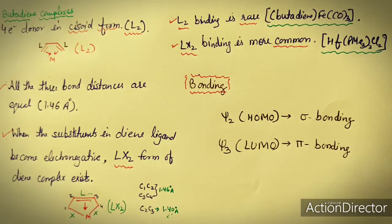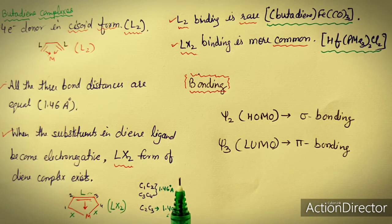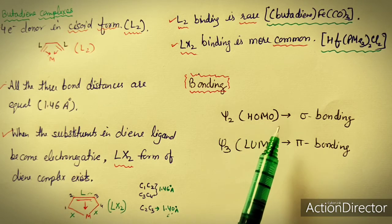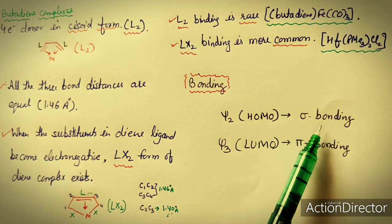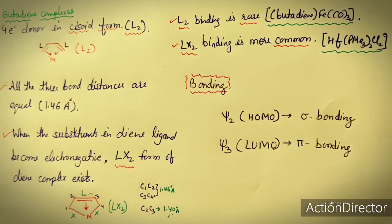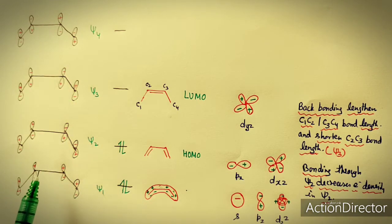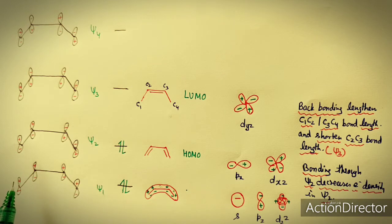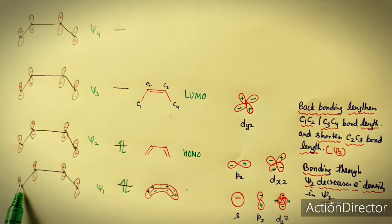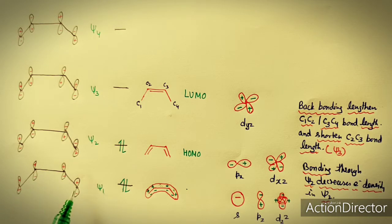Now, bonding in butadiene complexes. I will show you the molecular orbitals of the butadiene ligand. Psi 2 is the HOMO (highest occupied molecular orbital) and it forms a sigma bond with the metal, while psi 3, the LUMO (lowest unoccupied molecular orbital), can form pi bonding with the metal center. The figure shows four molecular orbitals arising from the linear combination of four p orbitals of butadiene, since butadiene has four carbon atoms each contributing one p orbital to pi bonding.